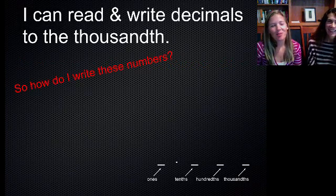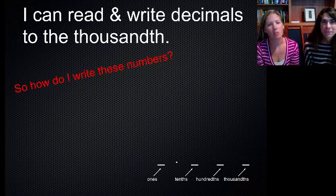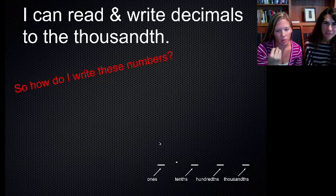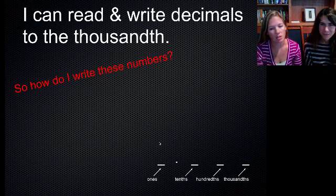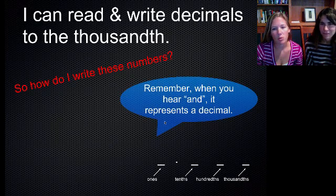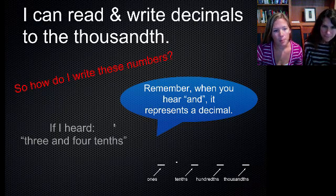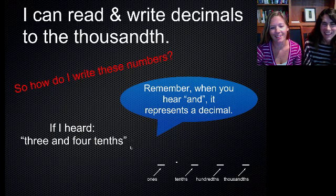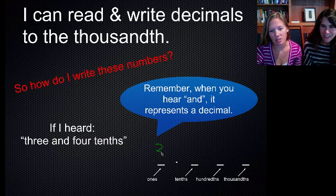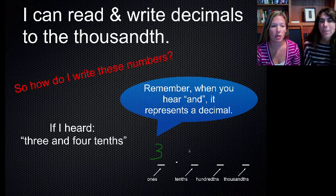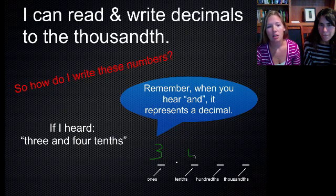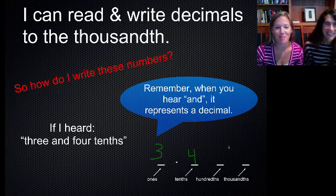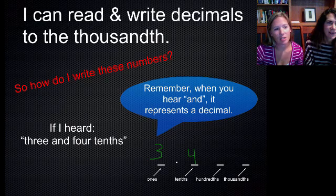All right. So now that you have learned how to read those numbers properly, now how do you write what you hear? We're going to give you some words and you have to try and write down what they are. So for our first one, remember when we hear the word and, that's where the decimal goes. So if I hear 3 and 4 tenths, you can see the 3 comes before because it comes before the and. And it says 4 tenths, so the 4 is going to be in the tenths column. So 3 and 4 tenths.